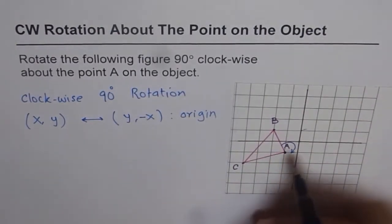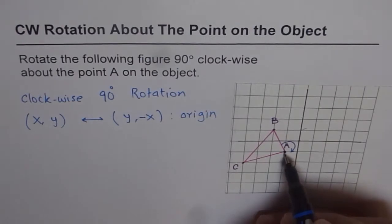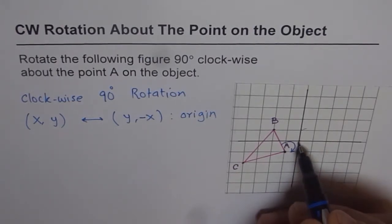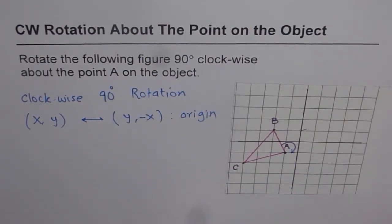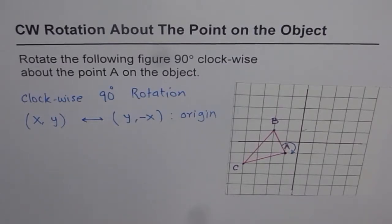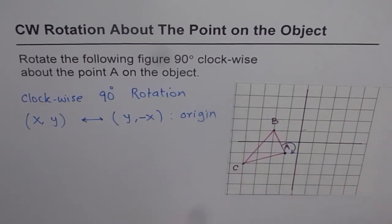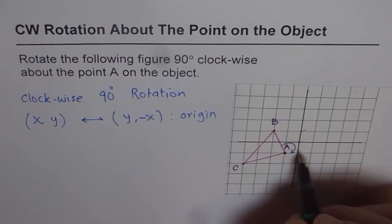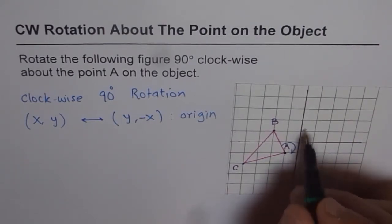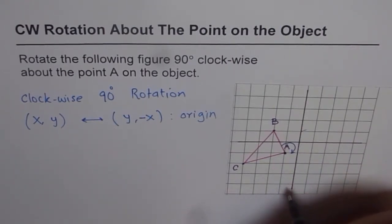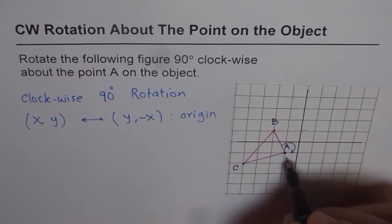In our case, we are rotating about a point which is not the origin, so there is some difference. How to compensate for that difference is what we need to figure out — we don't directly know the coordinate points for A, B, and C after a 90-degree clockwise rotation.